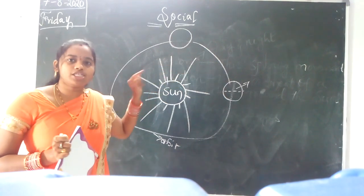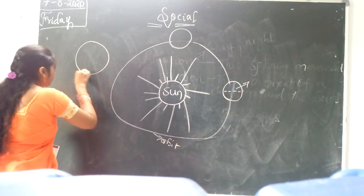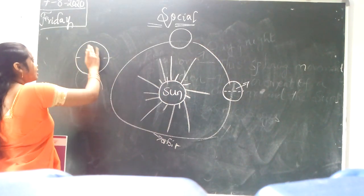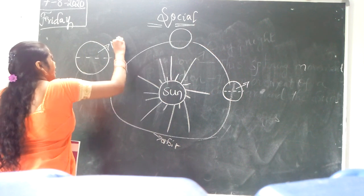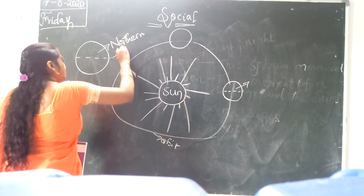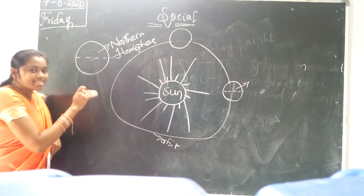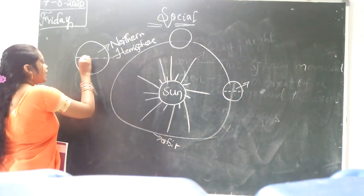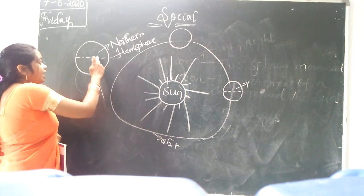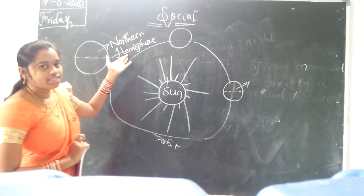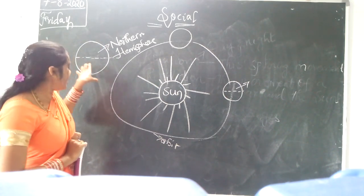Coming to March, we get the spring season. We have two hemispheres. The equator — which I already explained in the previous session — is an imaginary line. The top portion we call the northern hemisphere, and the bottom portion we call the southern hemisphere. The equator divides the Earth into two equal halves.